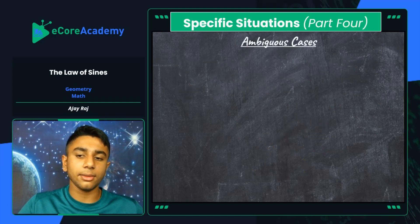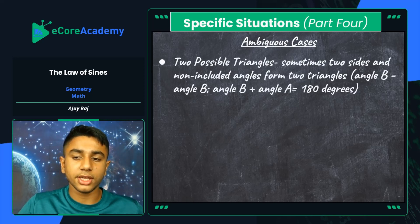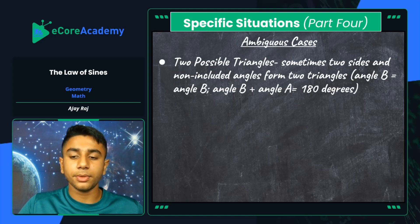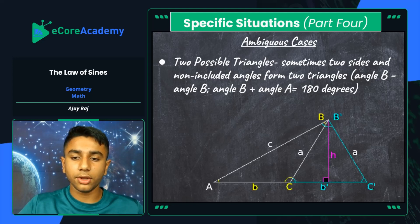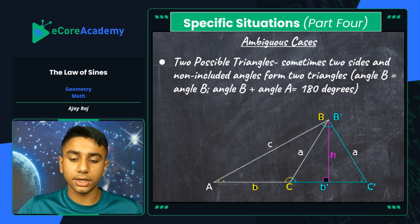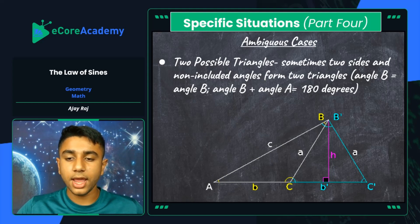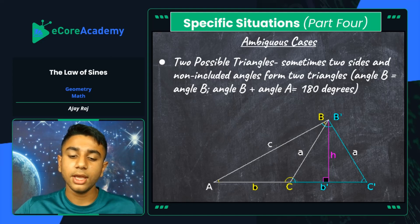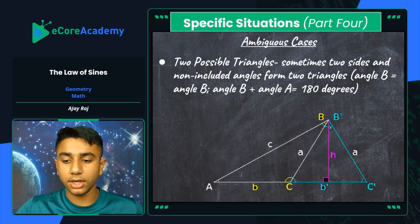Specific situations, part four — the second ambiguous case: two possible triangles exist. This occurs when two sides and a non-included angle form two triangles, meaning angle B equals angle B prime and angle B plus angle A equals 180°. In this scenario, the two triangles overlap to develop a right triangle. I'll do a dedicated later video on ambiguous cases — for now, I just want you to know all three cases exist.